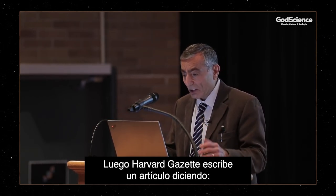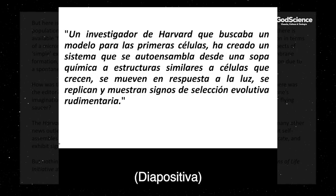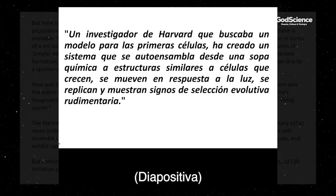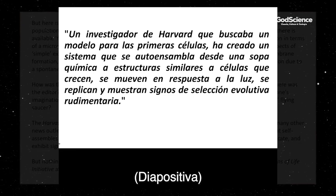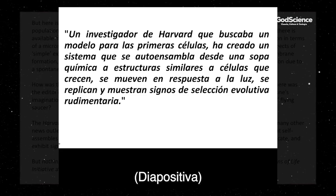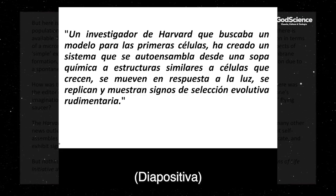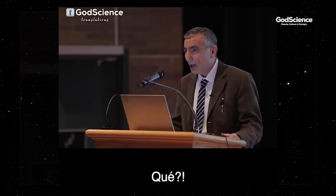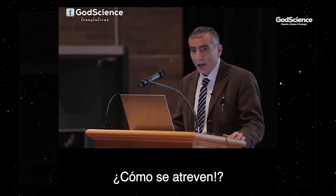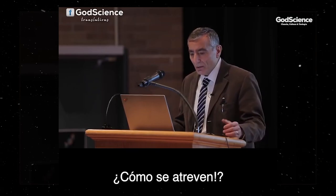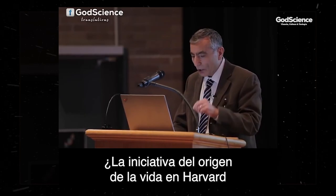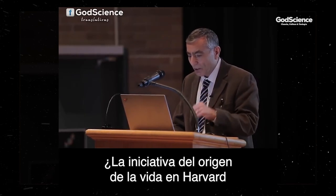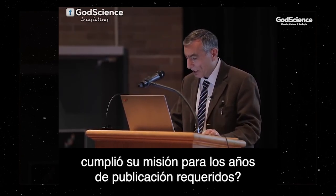The Harvard Gazette then writes an article — quote: 'A Harvard researcher seeking a model for the earliest cells has created a system that self-assembles from a chemical soup into cell-like structures that grow, move in response to light, replicate, and exhibit signs of rudimentary evolutionary selection.' Nothing of the sort was accomplished in this experiment. The public is deceived. Has the Origin of Life Initiative at Harvard fulfilled its mission for the year's requisite publication number?